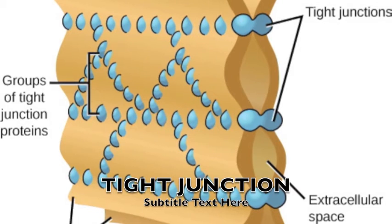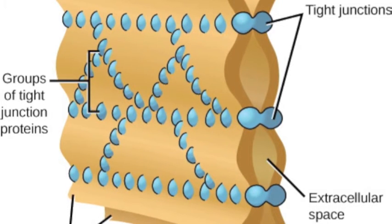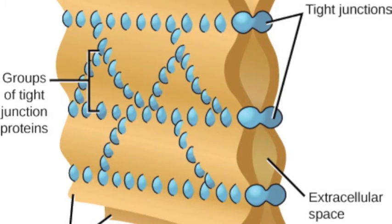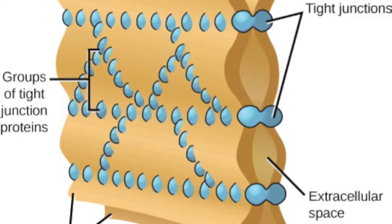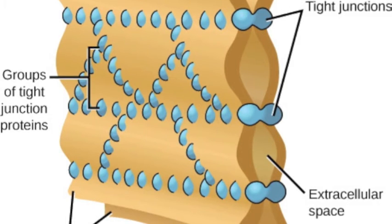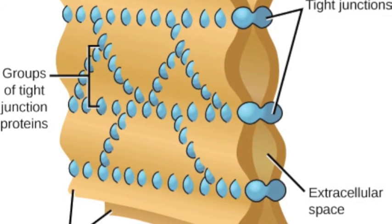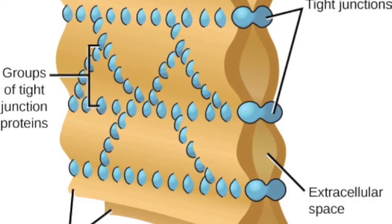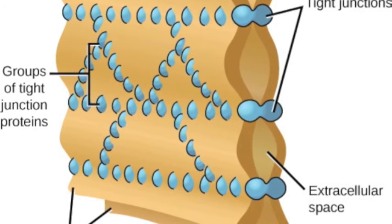Now let's look at a junction that's a little tighter, called the tight junction. Tight junctions are found in animal cells. Membranes of neighboring cells are pressed together so tightly that leakage of extracellular fluid is impossible. A tight junction can be seen in the human body between the bladder and the stomach.